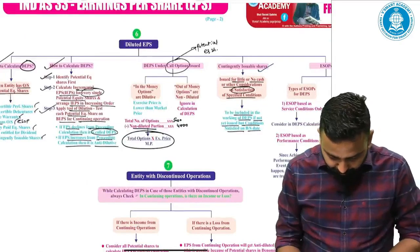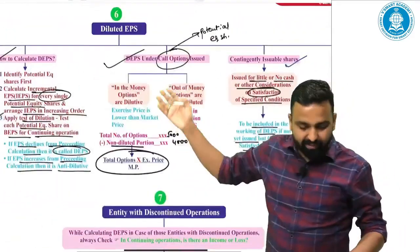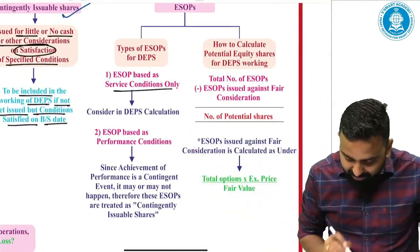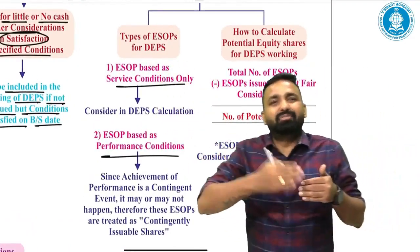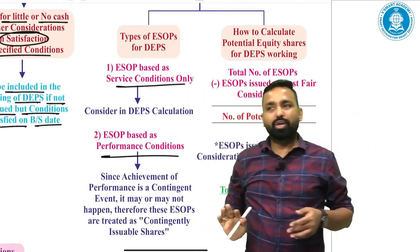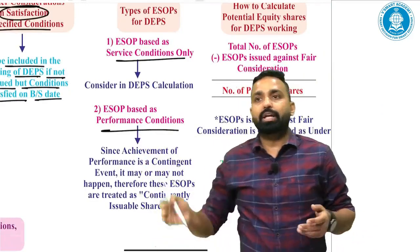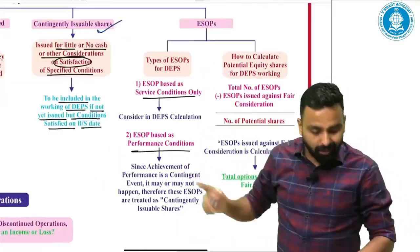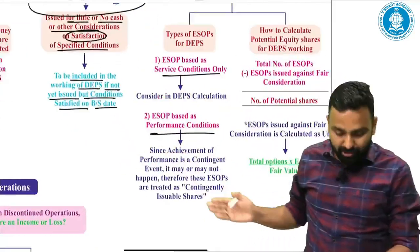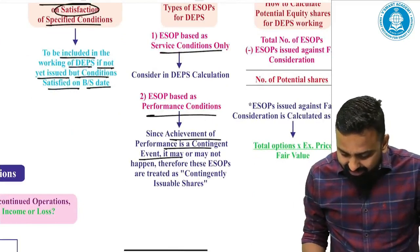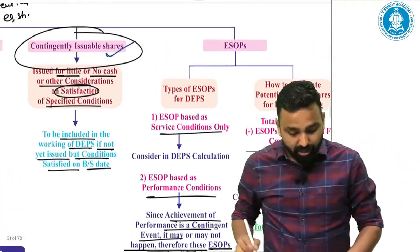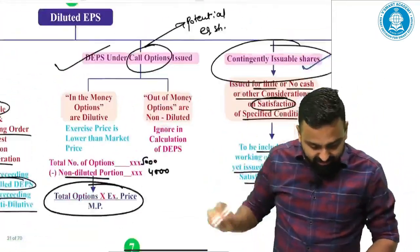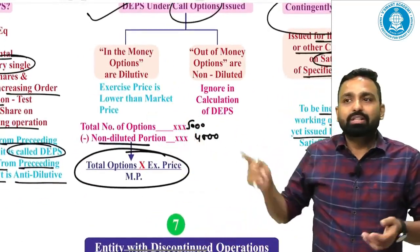ESOPs work the same as call options. There are two types: ESOPs based on service conditions (e.g., after 3 years of service I will give you shares) and ESOPs based on performance conditions (e.g., if net profit reaches a target). Performance-based ESOPs are treated as contingently issuable shares since achievement is a contingent event. ESOPs based on service conditions only are considered in DEPS working just like call options, with exercise price compared to market price.